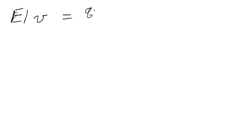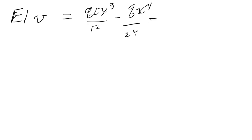That's the first integration. Now we integrate one more time to compute the deflection function v. Doing that, we get EI·v = qLx³/12 minus qx⁴/24 minus qL³x/24 plus C2. To evaluate C2, we need to know something about v. For a simply supported beam, at x = 0 or x = L, v must equal zero because the beam is supported at those points.